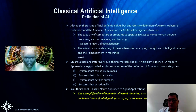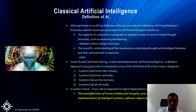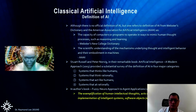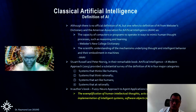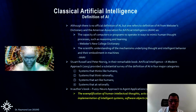Another definition from a very famous book on AI by Peter Norvig and Russell — called 'AI: A Modern Approach,' the later version is from around 2009 — one of the major books on AI. Their definition comes in four categories: systems that think like humans, systems that think rationally, systems that act like humans, and systems that act rationally.